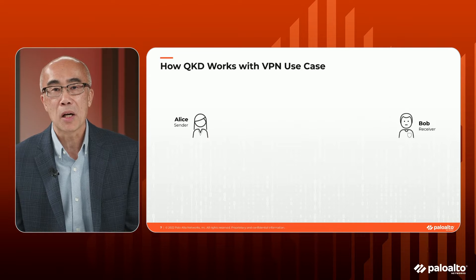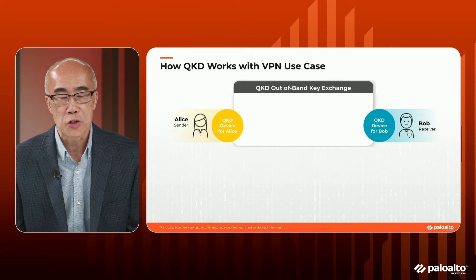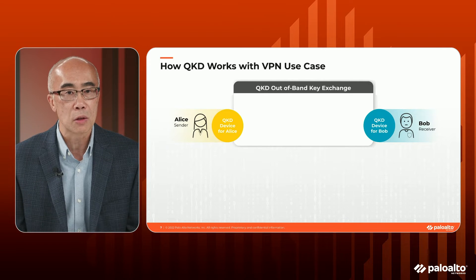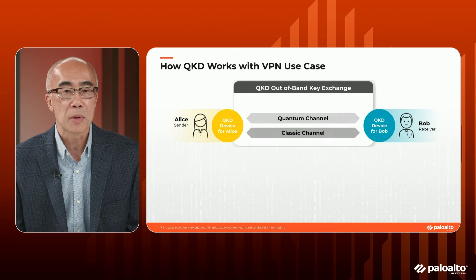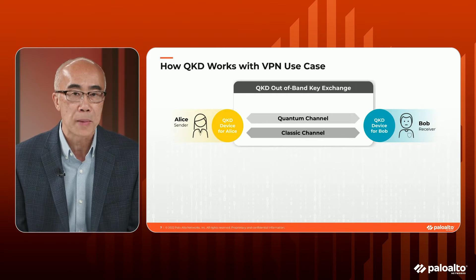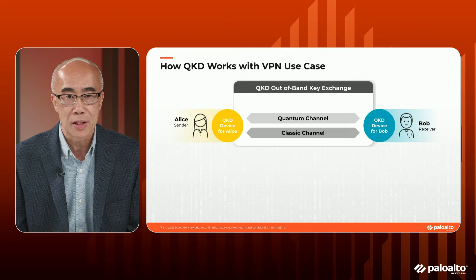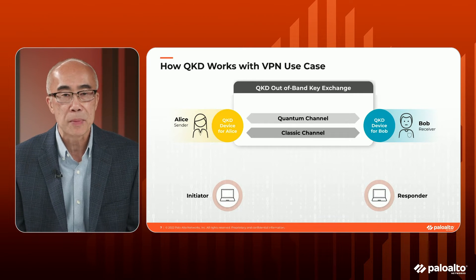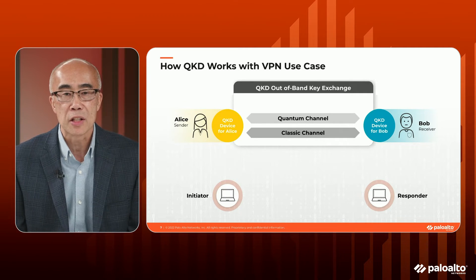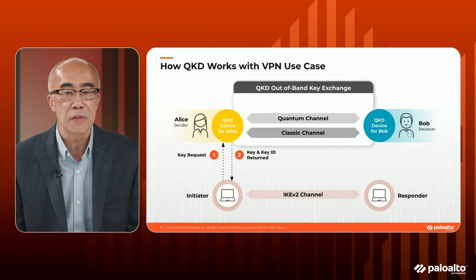Let's take a look at how this technology works. Typically we have a sender and a receiver — we'll call them Alice and Bob. Between Alice and Bob, we're going to have a QKD appliance at each of their local locations. Between these QKD appliances there are two communication channels: one is a quantum channel where we send the key using photonics in a sequential format, and the other is a classic network channel that acts as a control channel. When VPN devices need to bring up a post-quantum capable tunnel, Alice makes a key request to her QKD appliance, which responds back with a key as well as a key ID.